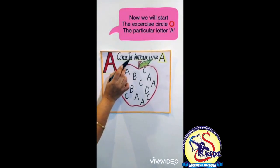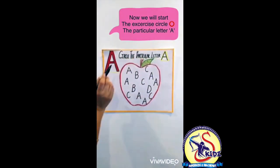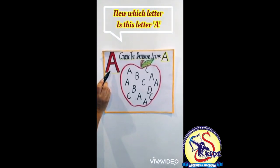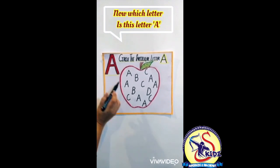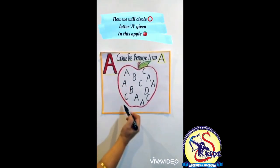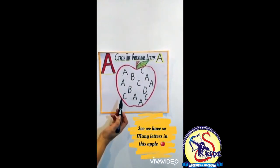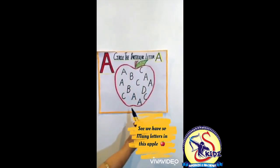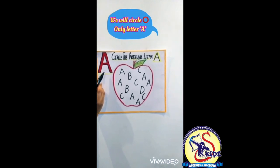Circle the particular letter A. Now which letter is this? Letter A. Now we will circle letter A given in this apple. See, we have so many letters in this apple. We will circle only letter A.